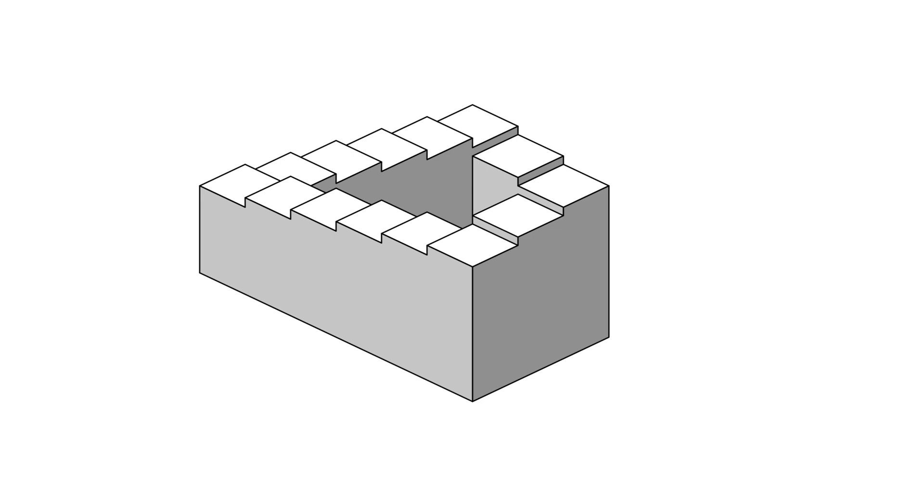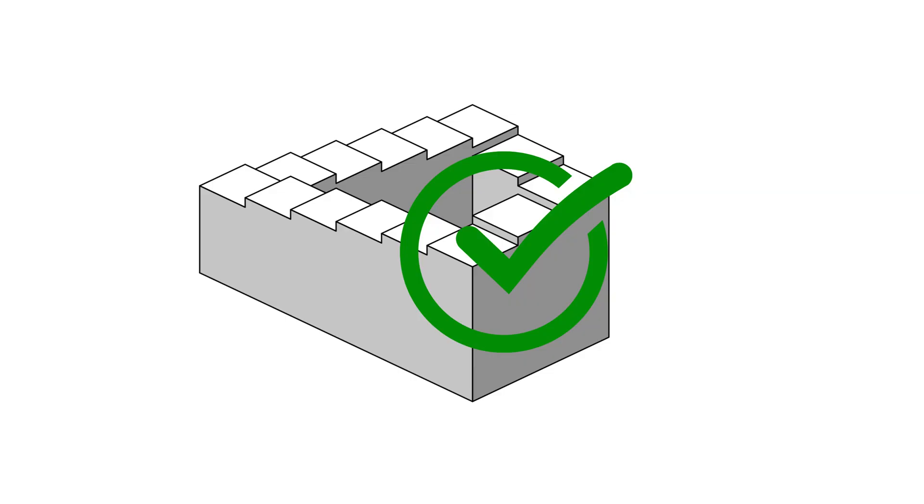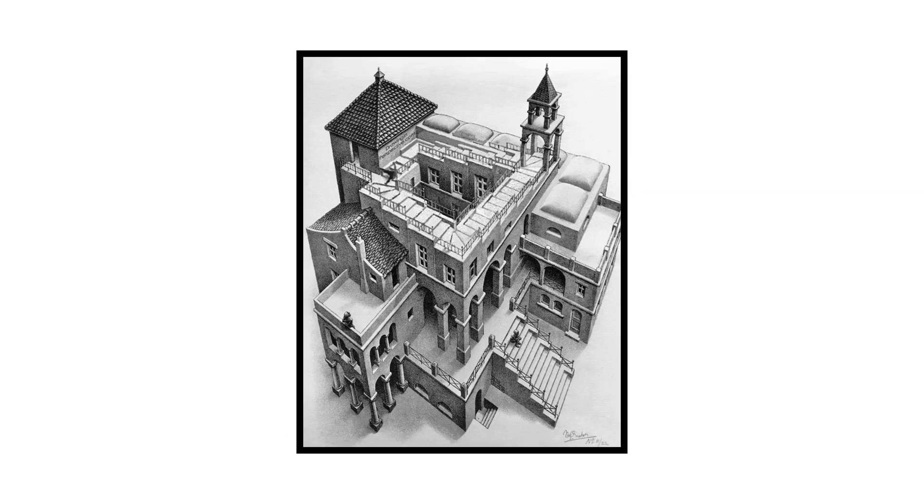Mathematically, this type of figure cannot exist in three-dimensional space without distorting its components, but it can be represented in two dimensions through a precise visual construction. It is based on a carefully designed perceptual illusion optimized to maintain coherence from a perspectival viewpoint.